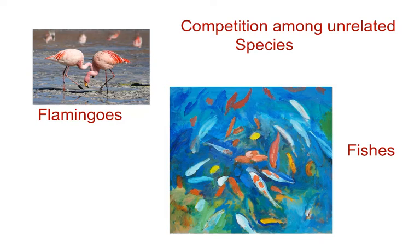Competition. When Darwin spoke of the struggle for existence and survival of the fittest in nature, he was convinced that interspecific competition is a potent force in the process of organic evolution involving natural selection. It is generally believed that competition occurs when closely related species compete for the same resources that are limited, but this is not entirely true. Among these, one method of competition is competition among unrelated species.